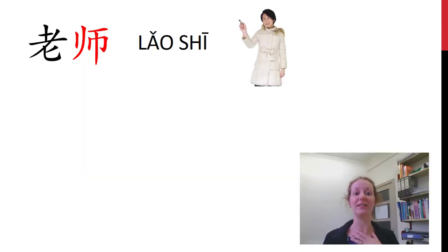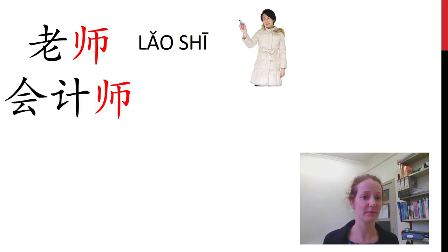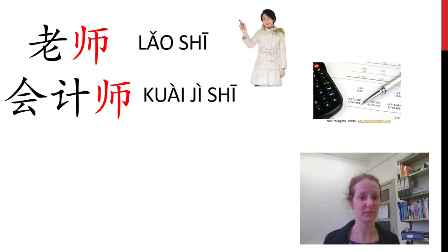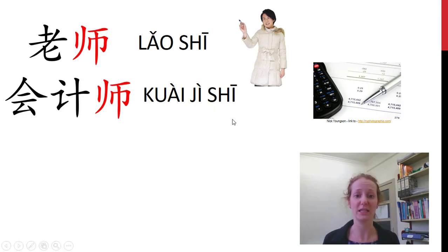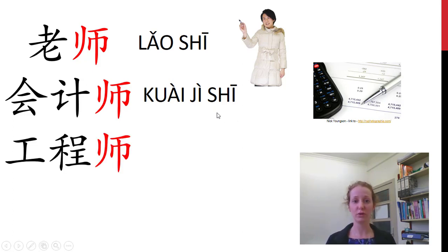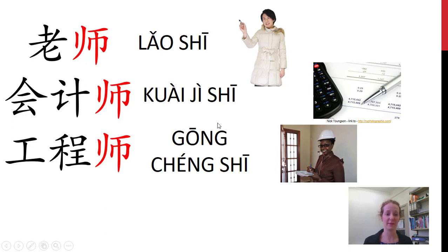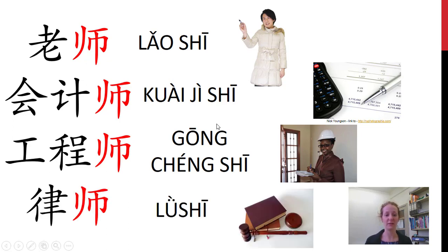这是什么? 我是老师. 对呀. 下一个, 会计师. You might have thought this might be pronounced differently, but it's one of those characters that has two pronunciations. A 会计师 is an accountant. 下一个, 工程师 — engineer. And 律师 — lawyer. These all have the 师 at the end, which means like they're a master of something.